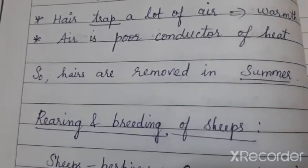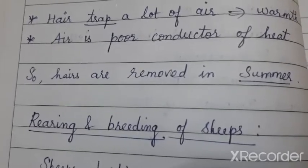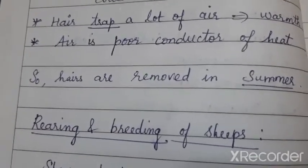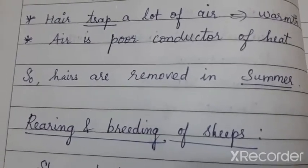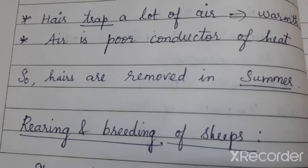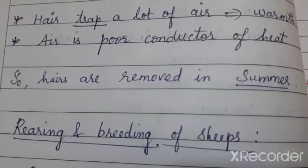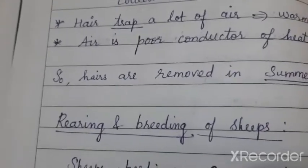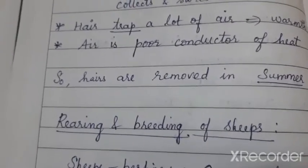The animals collect the air inside their hair and store it. The animals' hair is generally removed only during the summer season, because in winter the collected air in the hair layers keeps the animal's body warm, helping sheep and goats survive. In summer, the thick hair layers become uncomfortable for the animals, so that is the main reason we remove the hair especially in summer.